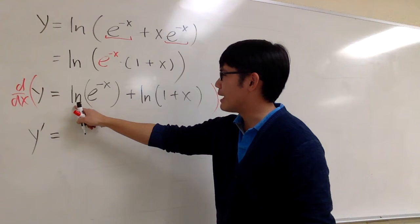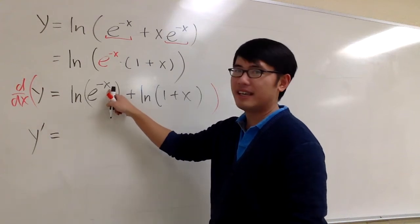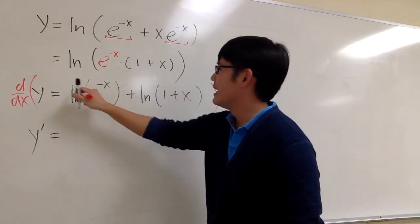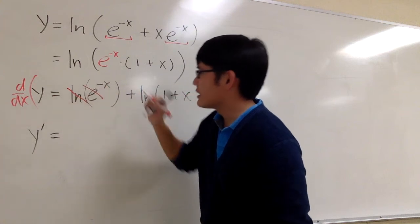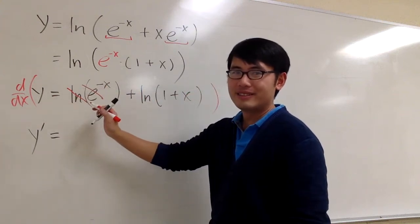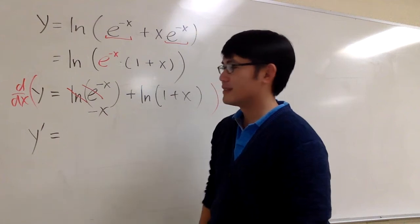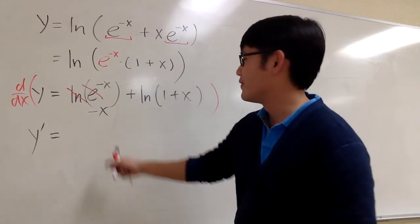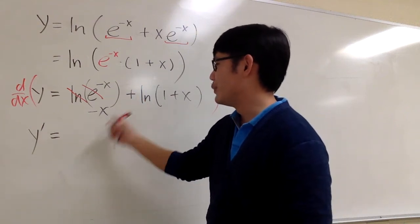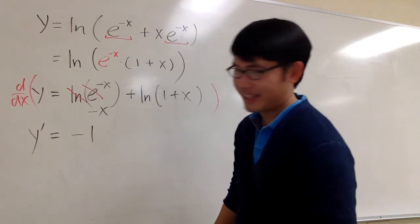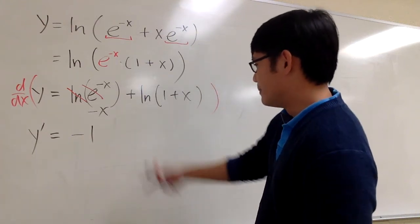What's this? The ln and e to the x cancel each other out, and I'm just looking at this as negative x. What's the derivative of negative x? We are going to get negative 1 for that. Very nice.